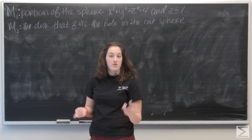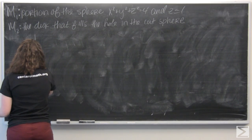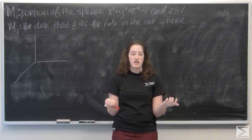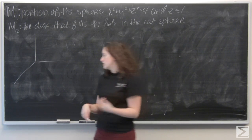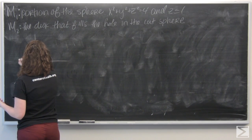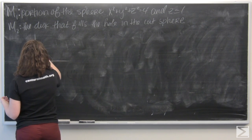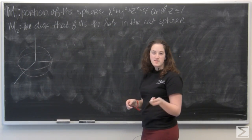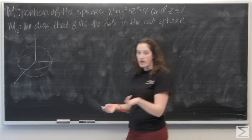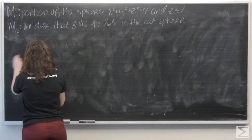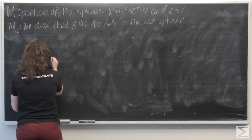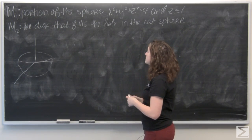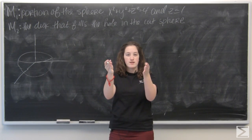Let's start by drawing a picture so we can get a better idea of what our surface actually looks like. M1 defines a sphere of radius 2 centered at the origin. Since z has to be less than or equal to 1, it cuts the sphere three quarters of the way up, leaving the lower portion. M2 is the disk that fills that hole in the cutout sphere, giving us a sphere with a flat top.